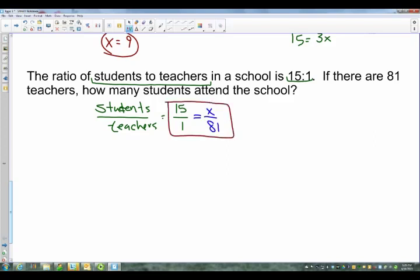From here you solve. So cross multiply. So you've got x times 1, which is x. You've got 81 times 15, which is 1,215, which means there are 1,215 students in that school.